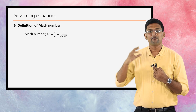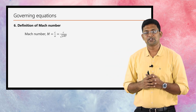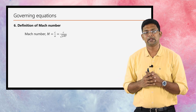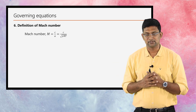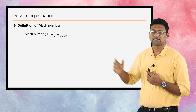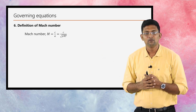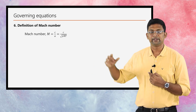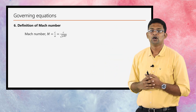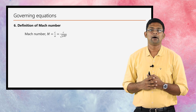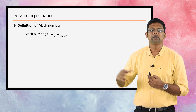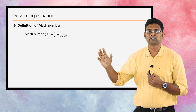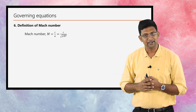Finally, along with the above equations, the definition of Mach number is also considered for relating the flow parameters in terms of Mach number. Mach number M = C/a, where C is the velocity of the fluid and a is the velocity of sound, which can be written as C divided by √(γRT). These are the important governing equations for an isentropic flow process with varying cross-sectional area.